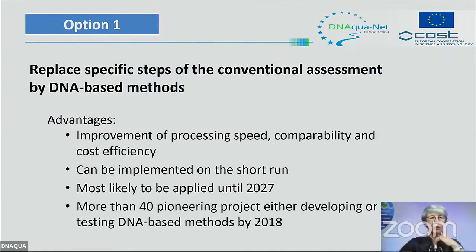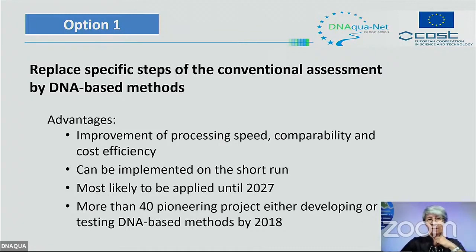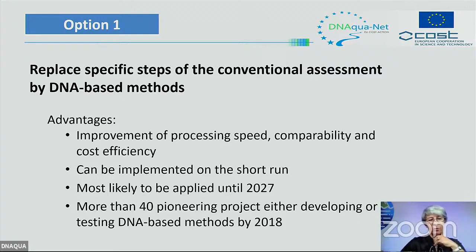Option one would replace specific steps of the conventional assessment with DNA-based methods — replacing morphological identification with DNA-based identification. This has many advantages: improvement of processing speed, comparability, cost efficiency, and it can be implemented in the short run. It is most likely to be applied until 2027. More than 40 pioneering projects were already done before Working Group 5 inquired in 2018.